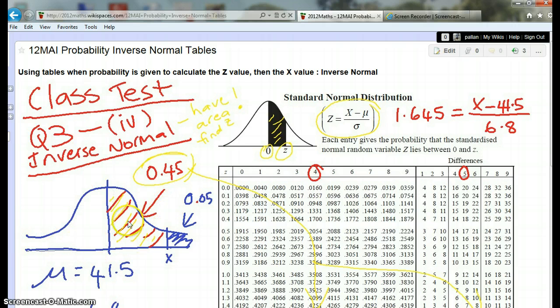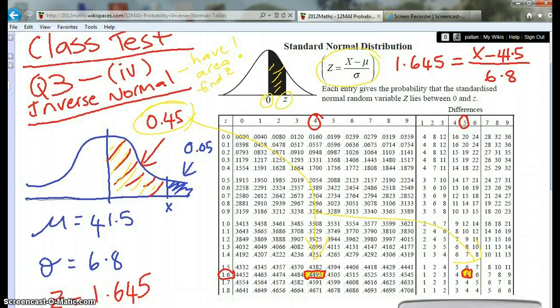But on this table, we're looking at the 45%. Between 0 and Z, the most it can be is 0.5, right, because it's only half of the area underneath. So then you actually look at this one in here.